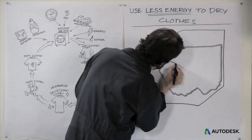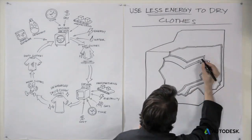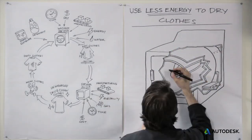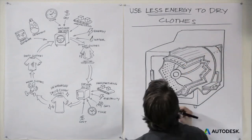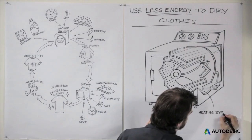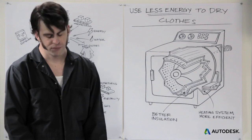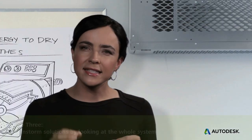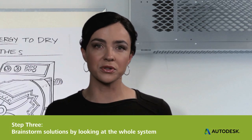You might jump in to the obvious solution of making the dryer's heating system more efficient. But you're likely to find that heating systems are already quite efficient and the incremental gains you can make by reengineering them dry up pretty quickly.